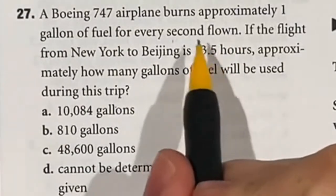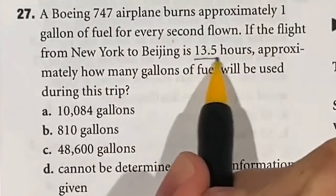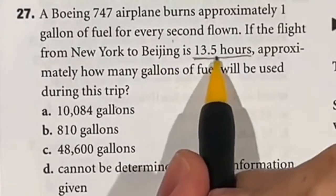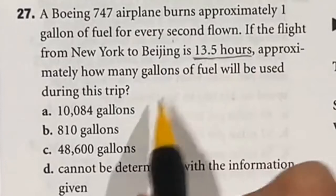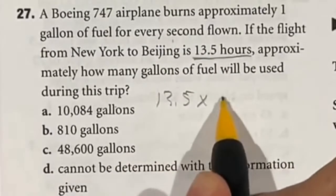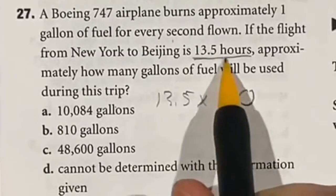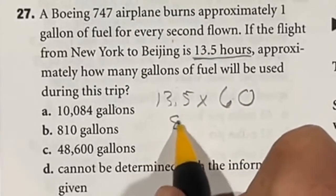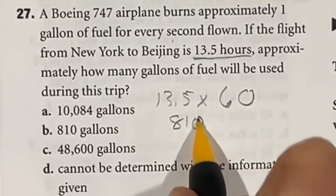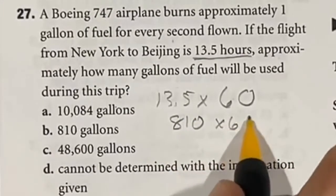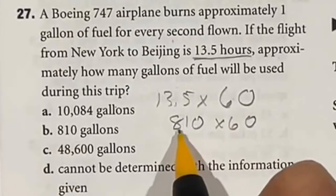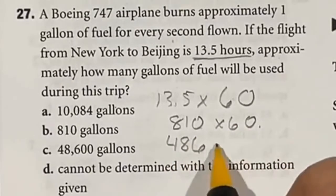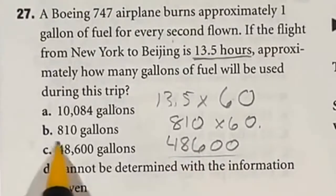For question 27, an airplane burns one gallon of fuel per second and is flying for 13.5 hours. We need to know how much fuel would be used, meaning we have to convert hours to minutes and then to seconds. 13.5 times 60: just do 13.5 times 6 which gives 81, then add the zero for 810 minutes. Multiplying by 60 again to go from minutes to seconds: 81 times 6 is 486, and then adding the two zeros gives us the final answer of 48,600, which is C.